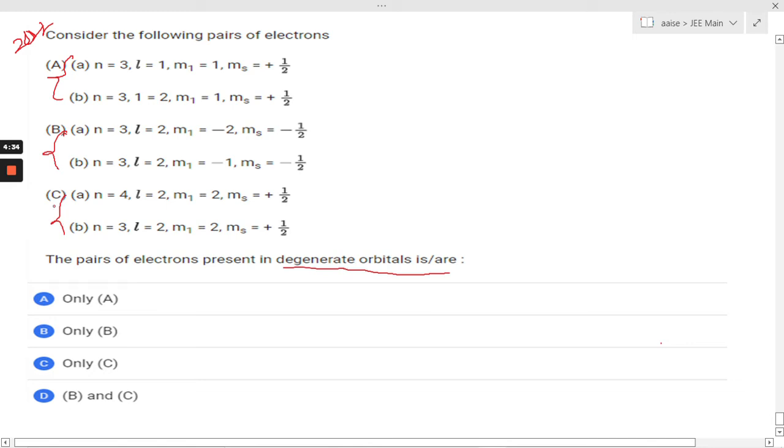First of all, let us understand what are degenerate orbitals. Let's suppose we are having p orbital. In p orbital we are having px orbital, py orbital, and pz orbital. Let's see this orbital is 3p orbital, so here it will be 3px, 3py, and 3pz.